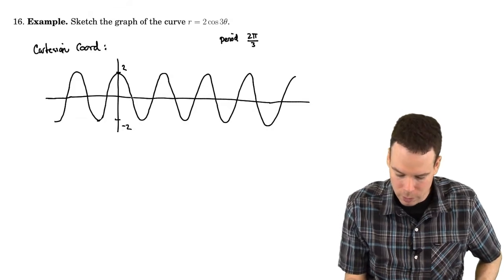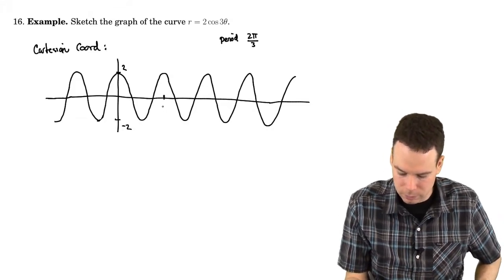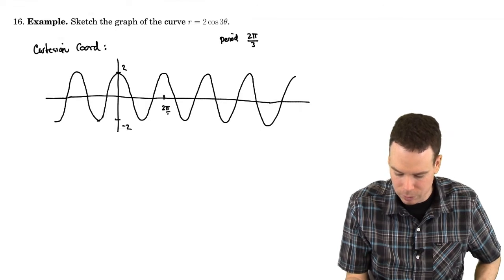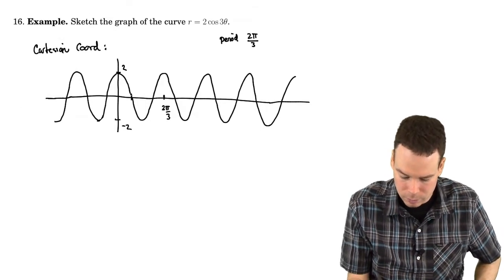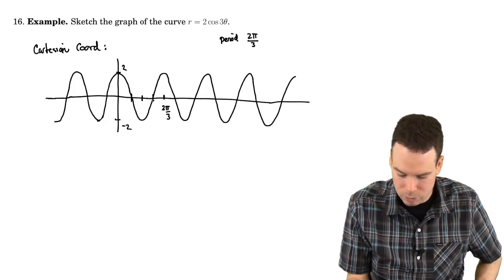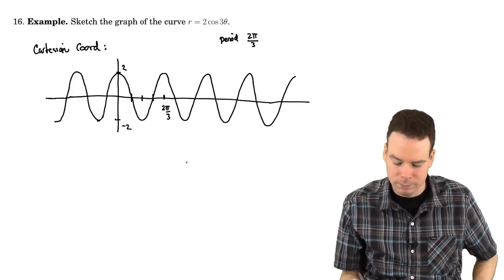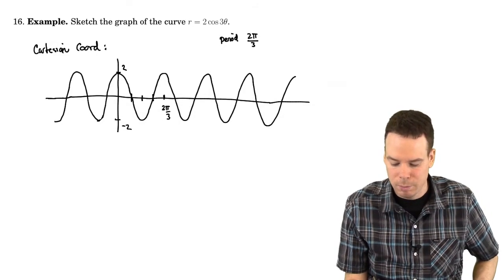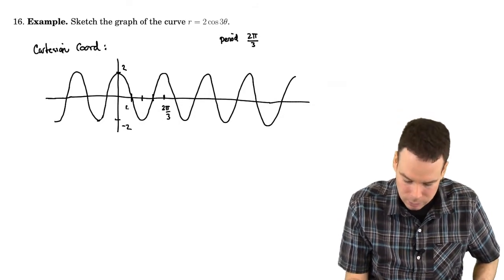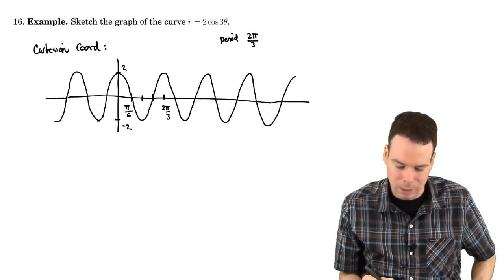So that means one cycle goes out to an angle of 2π by 3. And so if there's 4 interesting bits on that one cycle, then 2π by 3 divided by 4, which is π by 6, is that angle, or that first place that something interesting happens.